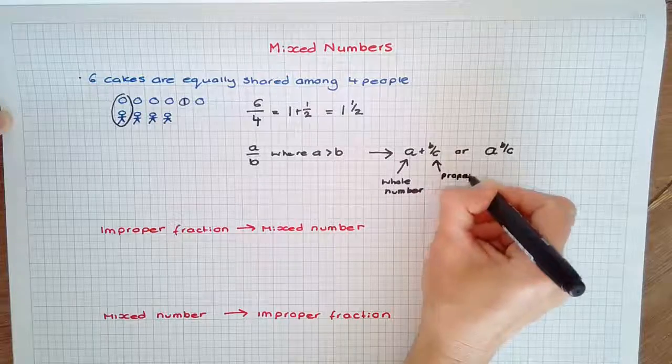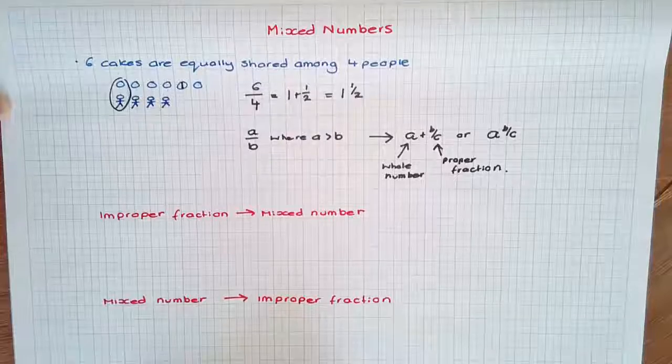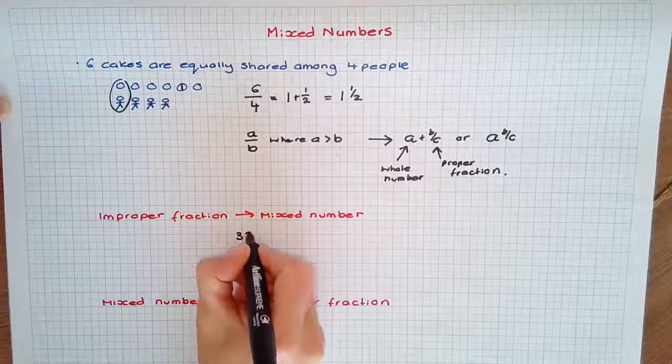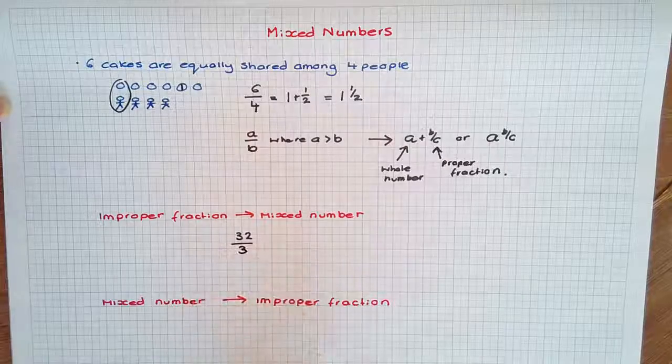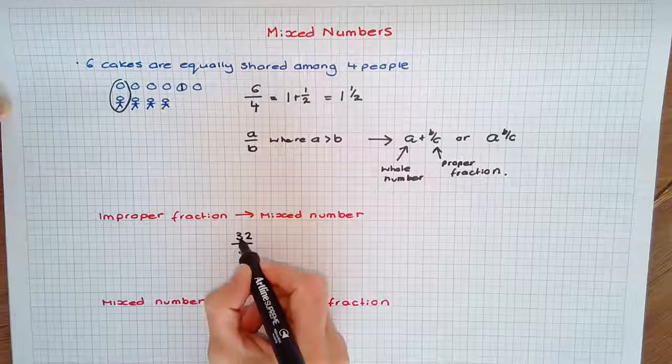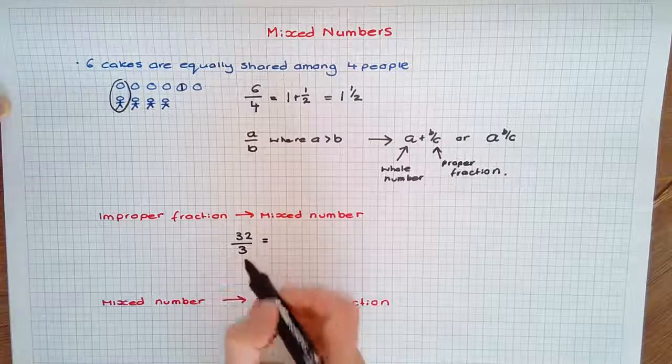So in order to convert improper fractions to mixed numbers, for instance 32/3, there's two different ways you can think about it. Three goes into 32 ten times with two remainder.